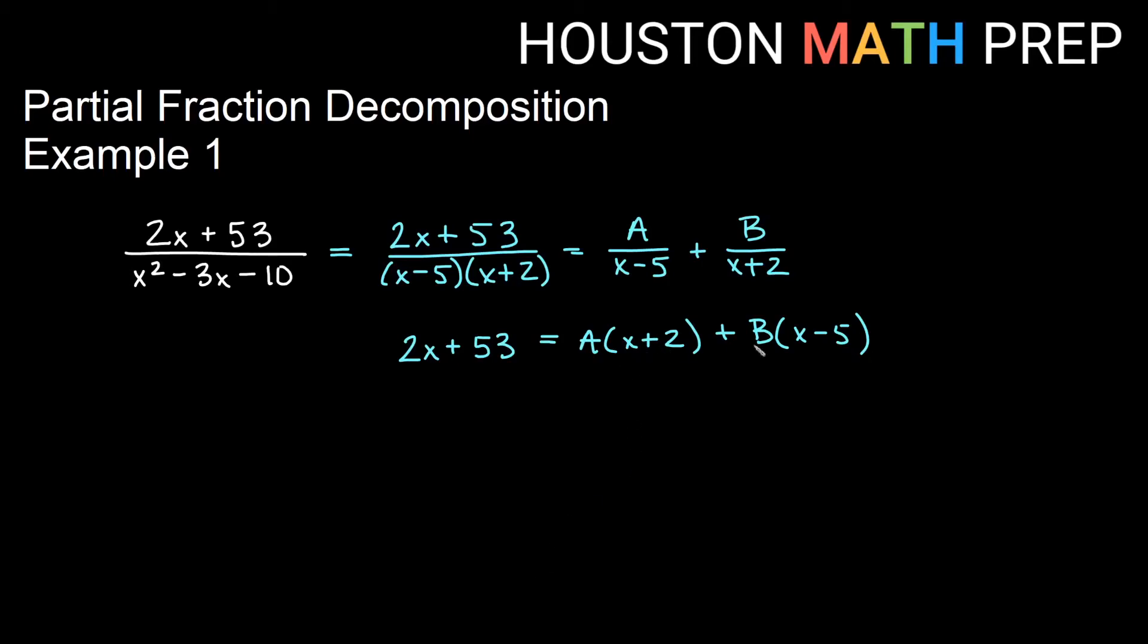This is a good candidate for setting factors equal to zero. If you'll notice in the first factor, I could set x equal to negative 2, and that's going to allow me to make this factor zero, so we'll go ahead and do that. So we'll have negative 4 plus 53 equal to A times 0 plus B times negative 7.